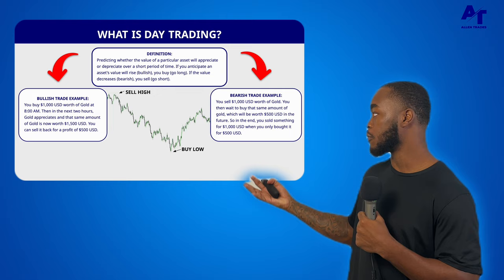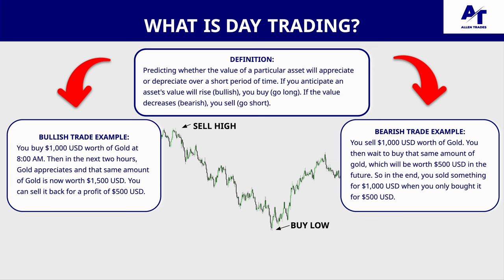Vice versa, if you're bearish — let's say it's 8 in the morning, you're trading gold, and you sell a certain amount of gold for $1,000. Then in the next few hours it depreciates because you're bearish, and now that same amount of gold is worth $500. So you buy that gold for $500. Basically, you sold something for $1,000 that you actually bought for $500, giving you a profit of $500.